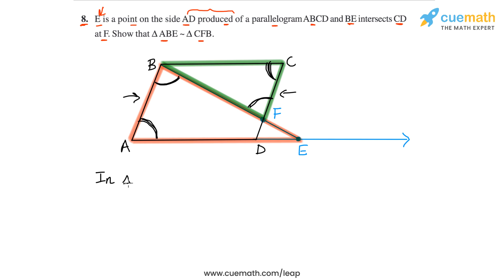In triangle ABE and triangle CFB, these are the two triangles we are comparing. So we have angle BAE is equal to angle FCB, because these two are opposite angles in a parallelogram. What is the parallelogram? So the parallelogram is ABCD, and these two angles are opposite angles of that parallelogram.